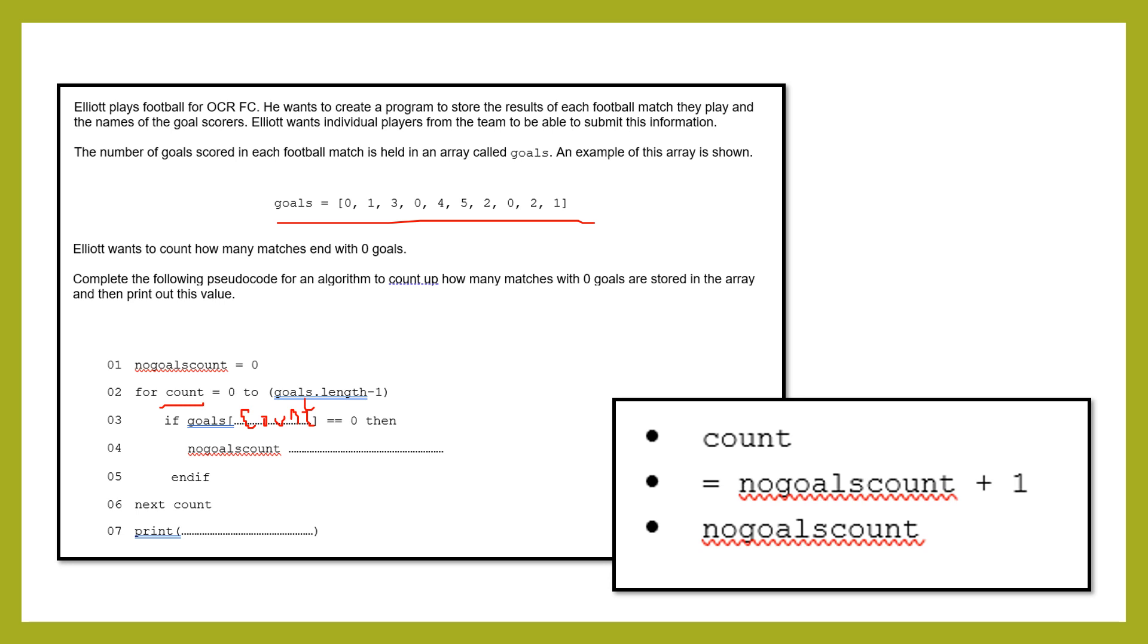I'm then going to make it goals scored equals, sorry, nogoalsscored equals nogoalscount plus one, because we want it to change. Otherwise, that value never changes, so our test value will always be equal to zero, which means it will not loop, it will never ever break the loop, it will just loop forever. So we need to make sure that we've got that, the last one is usually always in your question paper, what you want to print out, and you always want to print out your variable.